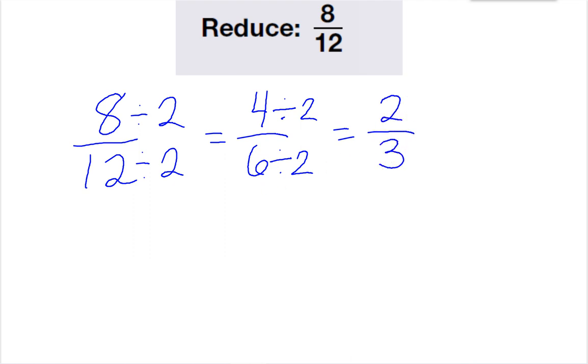I look to see, are there any common factors with two and three? Well, the only one there is is the number one. Dividing by the number one doesn't change anything. So this is as much as I can reduce eight-twelfths to. Eight-twelfths is the same as two-thirds.